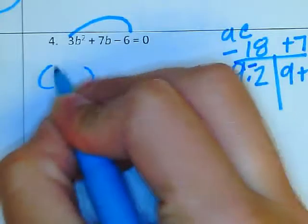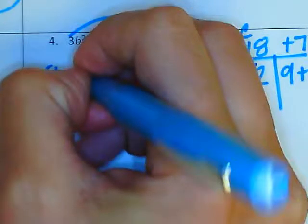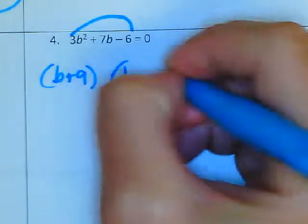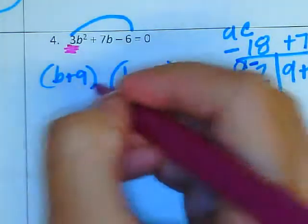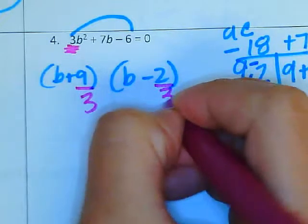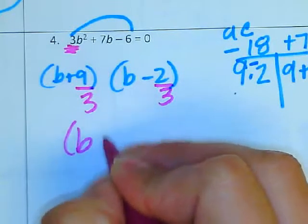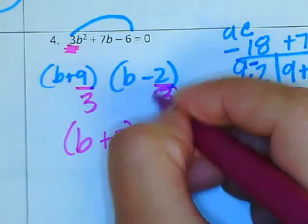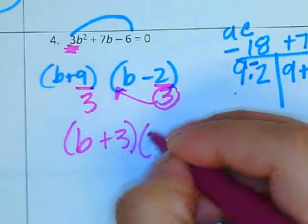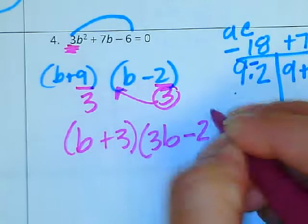So then here I'm going to put my B plus 9 and my B minus 2. Because this A is not 1, I have to divide by A. So then I would end up with B plus 3, and here I cannot simplify anymore, so bottoms up, 3B minus 2.